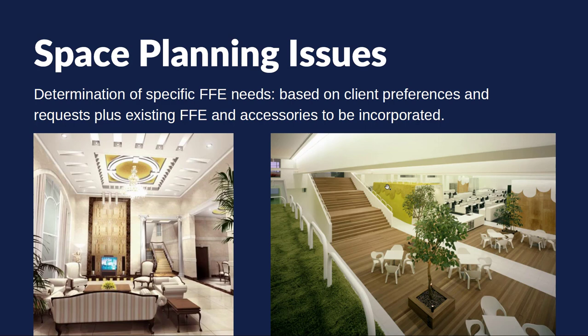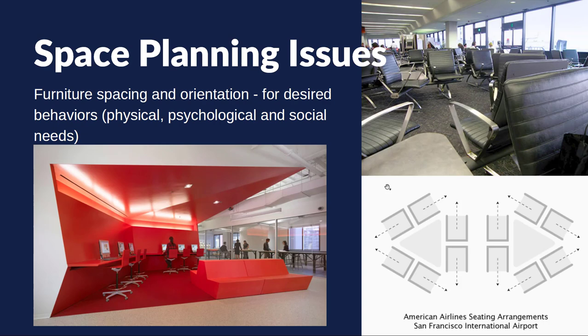While space planning, we also need to think about the furniture, fixtures, and equipment required of the space — FF&E. This will all be based on client preferences and may also require that existing furniture pieces, accessory pieces, and things like that need to be incorporated. You might need to work around a pre-existing ceiling design or fireplace, or you might need to keep the old furniture a client has. All of that will have dramatic impacts on how you plan a space.